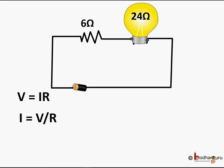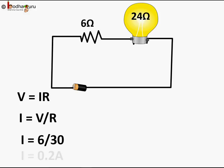So this is the total resistance of the circuit. Now we use Ohm's formula: I is equal to V by R. So I is equal to 6 by 30, which is equal to 0.2 amp current flowing throughout the circuit.